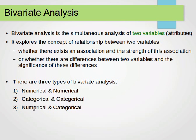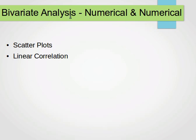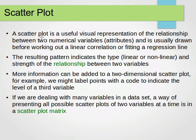Since we have two types of variables — numerical or categorical — and we're dealing with two at a time in bivariate analysis, we can have two numerical variables, two categorical variables, or one numerical and one categorical. For numerical and numerical, we have two techniques: scatter plots or linear correlation. A scatter plot is a useful visual representation of the relationship between two numerical variables. It's usually drawn before computing a linear correlation or fitting a regression line, giving us a feeling for the data. The resulting pattern indicates the type and strength of the relationship — whether linear or non-linear.